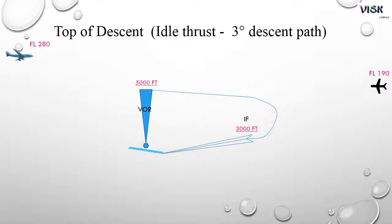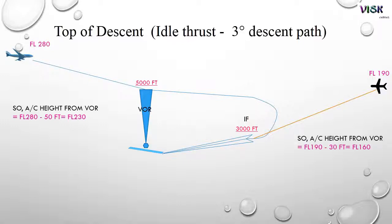Refer to the last rule for top of descent. For this one, just multiply. Refer to the same examples, flight level 280 and flight level 190. For flight level 280, the different altitude is 230, and flight level 190, the different altitude is 160. We just follow this formula.